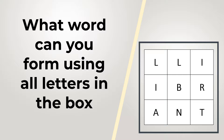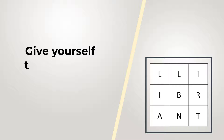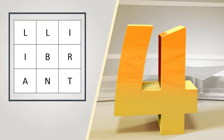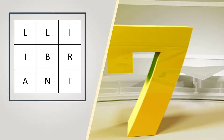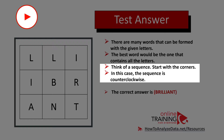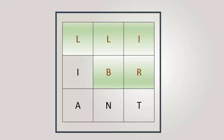If you like solving word puzzles, this question might be for you. Look at the 9 letters in the box and determine what word you can form using all the letters. Give yourself 10 to 15 seconds. A hint: as you move left to right, right to left, diagonally, or up and down, you might get an idea of the word. If we start in the middle and go around counter-clockwise, we can form the word 'brilliant' — B-R-I-L-L-I-A-N-T. The correct answer is brilliant.